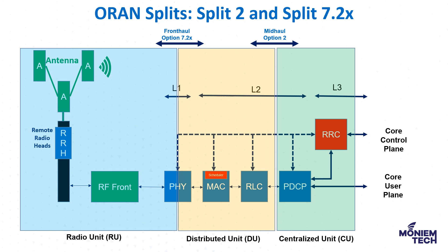In the Open RAN environment, the RAN is disaggregated into three main building blocks: Radio Unit, Distributed Unit, and Centralized Unit. The RU is where radio frequency signals are transmitted, received, amplified, and digitized — it is located at or near the antenna. The DU and CU are the computational parts of the base station. The DU is physically located at or near the cell site, though it can also be co-located with the CU in a data center.